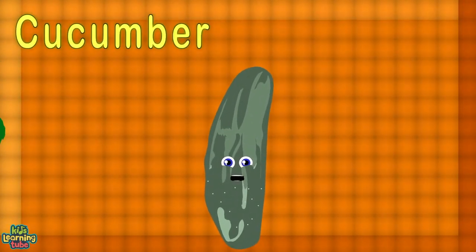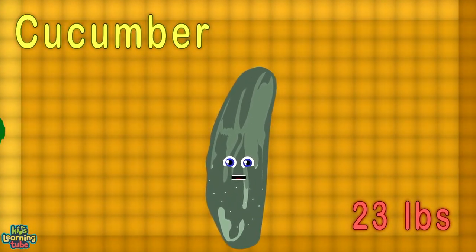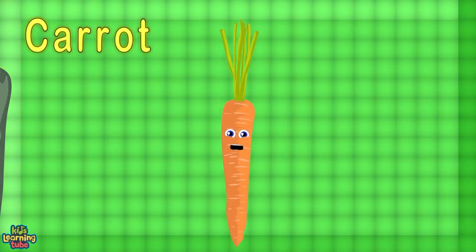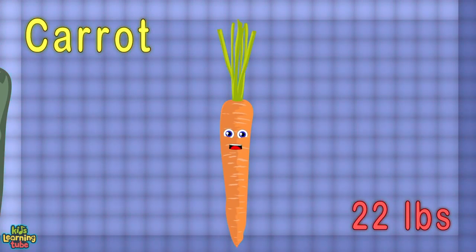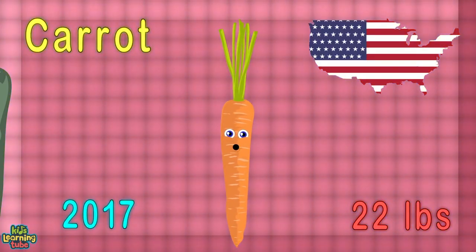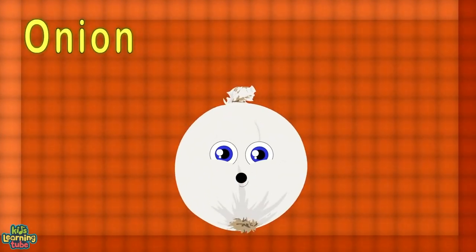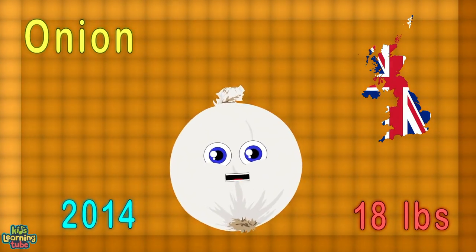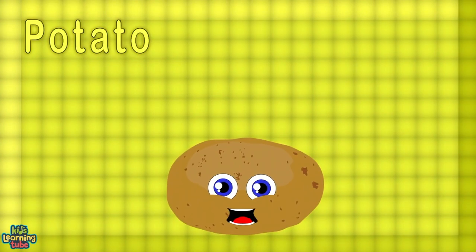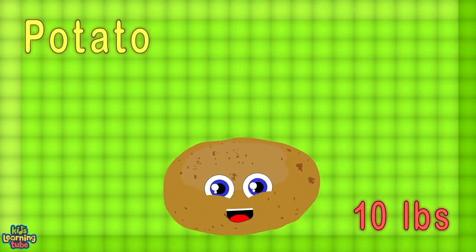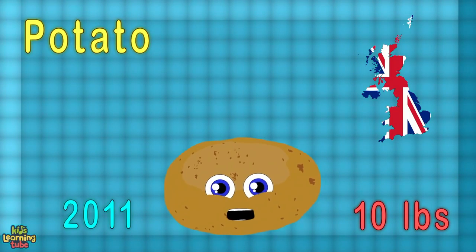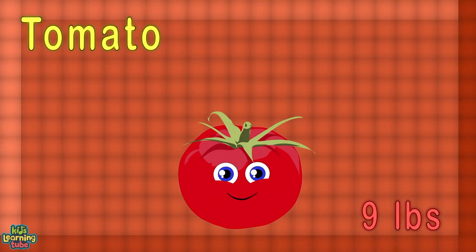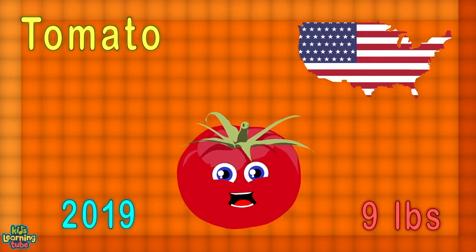I'm the largest cucumber at 23 pounds, grown in the UK in 2015. I'm the largest carrot at 22 pounds, from the USA in 2017. I'm a huge onion at 18 pounds, grown in the UK in 2014. I'm the biggest potato at 10 pounds, grown in 2011 from the UK. I'm a huge tomato weighing in at 9 pounds, grown in the United States in 2019. I'm the largest eggplant at 6 pounds, grown in the UK in 2018.